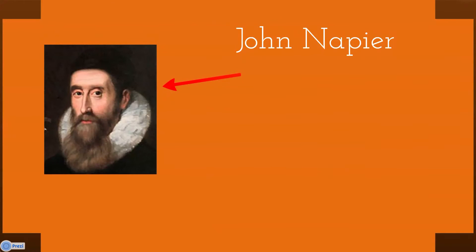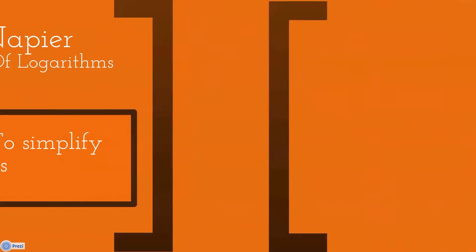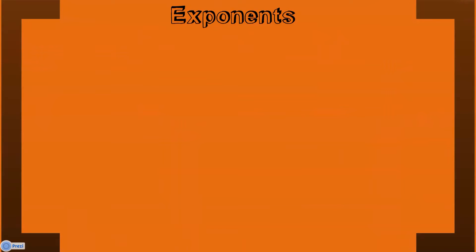John Napier is the father of logarithms, a Scottish mathematician who spent his entire life trying to do one thing — and this is the purpose of logarithms: to simplify calculations. The basics of logarithms stem from having an understanding of exponents. Exponents are used as a short way to represent a number, and they are governed by rules.